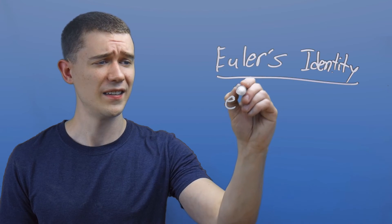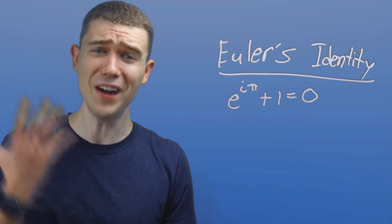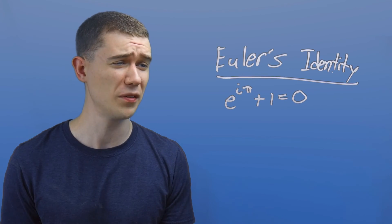But there is one equation that I just cannot help but saying pi should be there. Euler's identity, e to the i pi plus one is zero. I mean, come on.